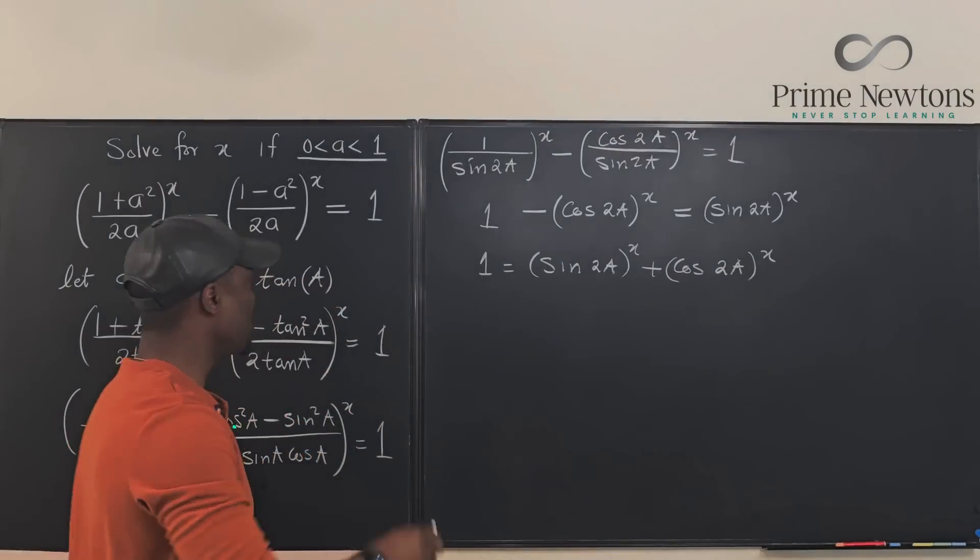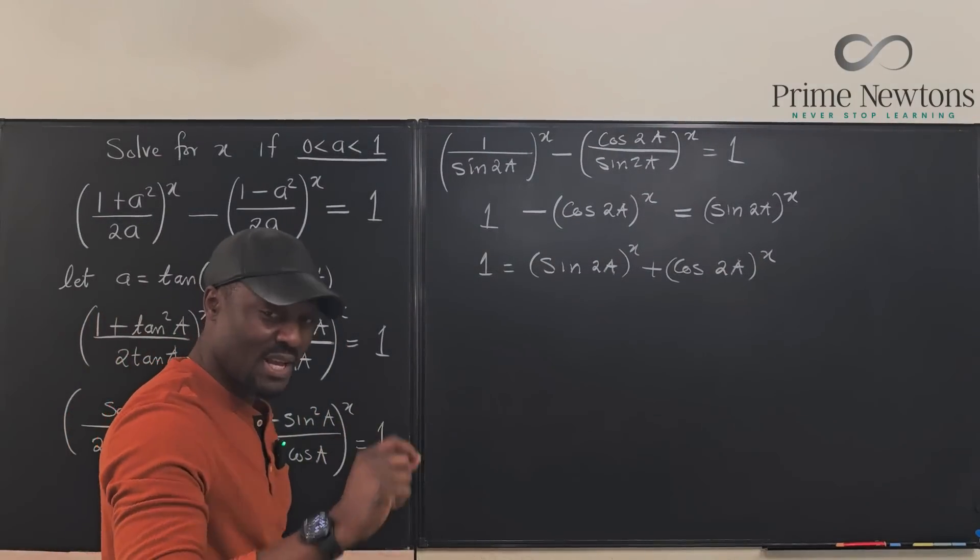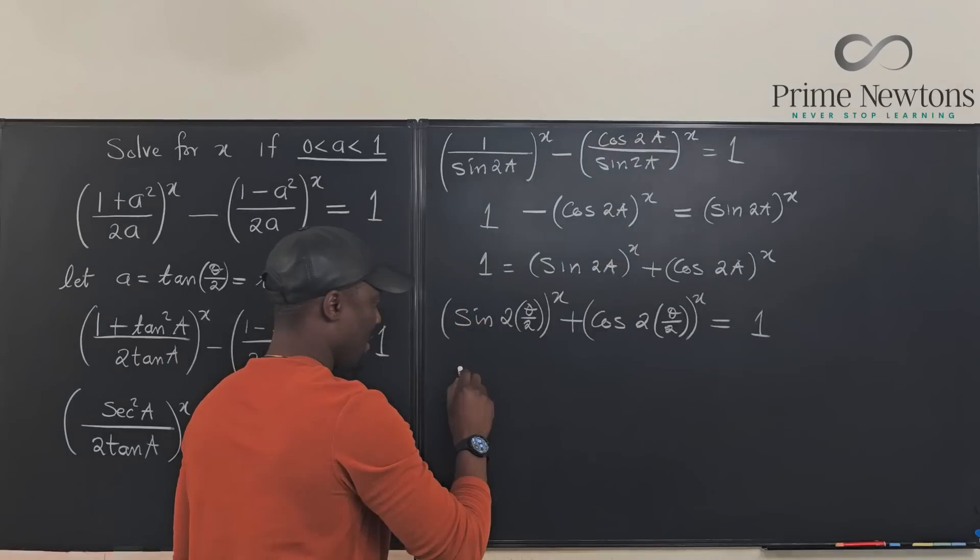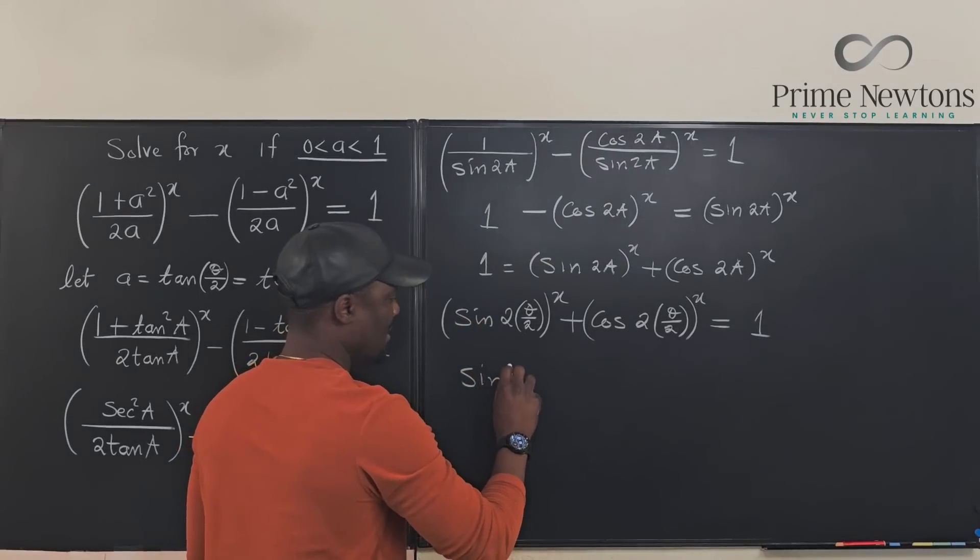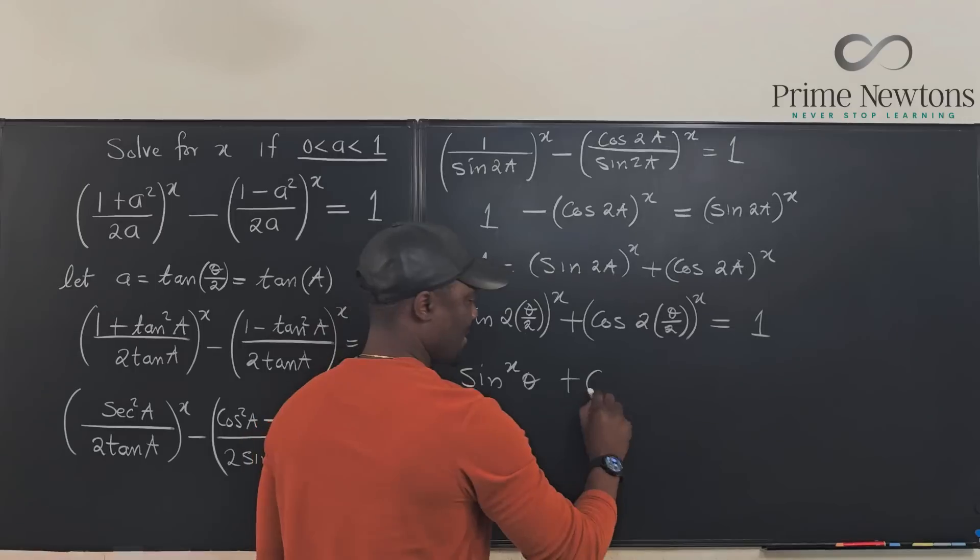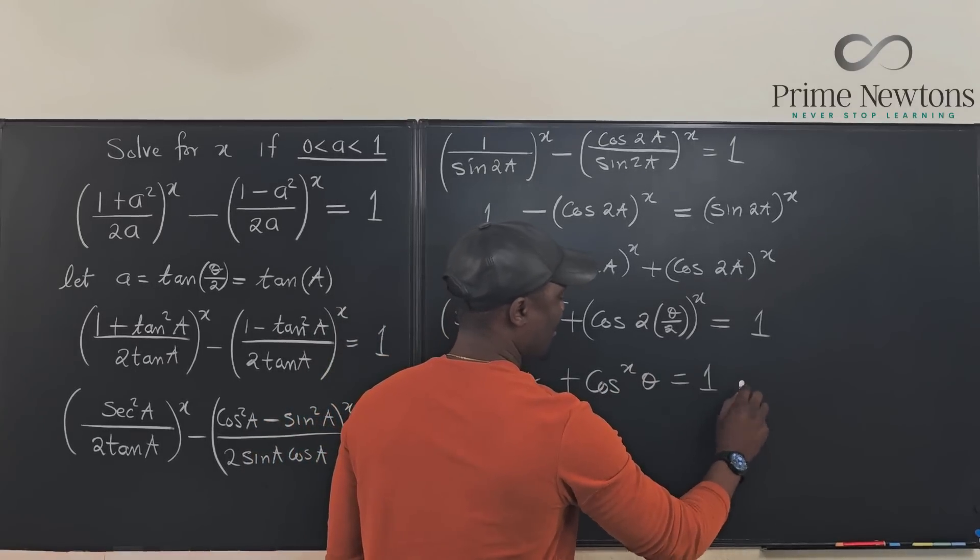I'm sure you can guess what the answer is at this point. Because what I'm going to do now is put the sine and cosine together and I'm going to put one on one side. So I'm going to have one is equal to sine 2A raised to power x plus cosine 2A raised to power x. Now what did we say A was? A was theta over 2. I just did the replacement because I didn't want to be writing it frequently. So I can say that sine to the x theta plus cosine to the x theta is equal to 1.